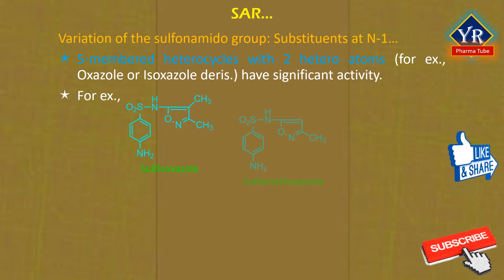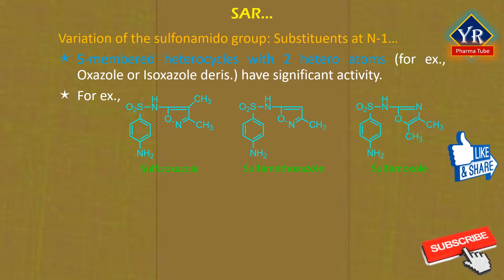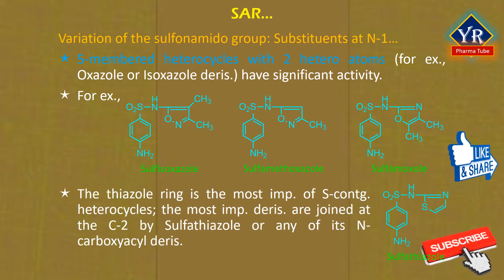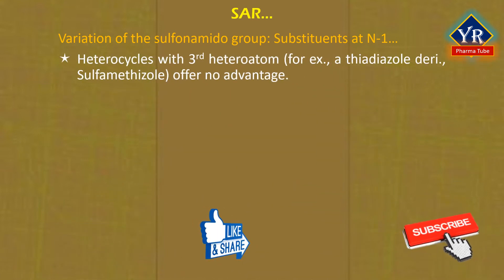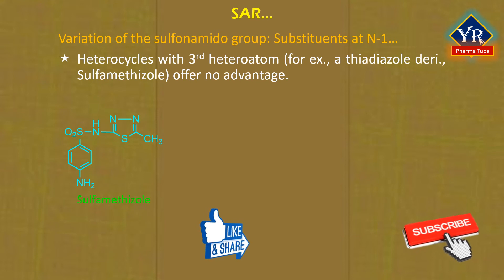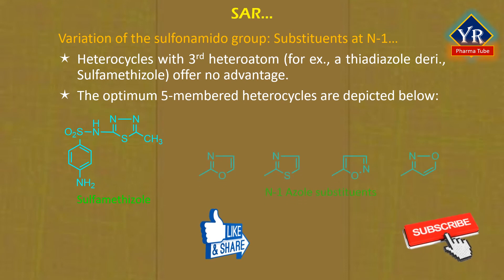For example, sulfapyridine, which contains a two-pyridine group, is unique, being the only sulfonamide containing a lone nitrogen atom within its heterocyclic pyridine ring to achieve widespread use. A five-membered heterocyclic substituent that contains two heteroatoms, for example oxazole or isoxazole, have been successfully developed to have significant antibacterial activity. For example, sulfisoxazole, sulfamethoxazole, and sulfamoxazole. The best oxazole-derived agents have the heterocyclic ring attached at the C2 position to the sulfonamide N1 position. Isoxazole derivatives can be attached at the corresponding C3 or C5 positions. The thiazole ring is the most important of the sulfur-containing heterocycles. The most important derivatives are joined at the C2 position as exemplified by sulfathiazole or any of its N-carboxyacyl derivatives.